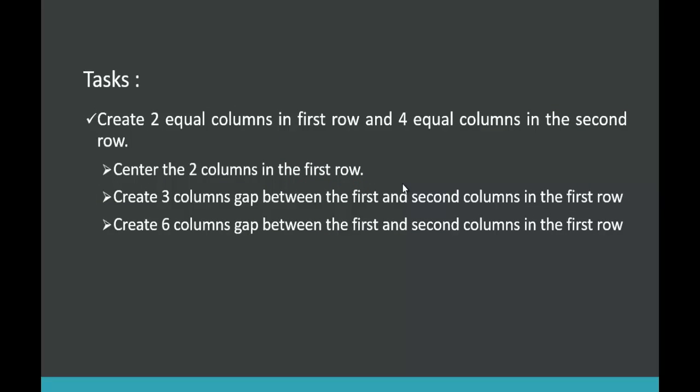To understand this clearly, it's time for a demo with some tasks to complete. Once we are done with the tasks, we'll fully understand Bootstrap grid column offset. The exact task is: create two equal columns in the first row and four equal columns in the second row. Let's start with the first part.